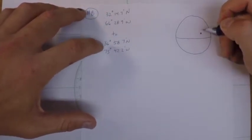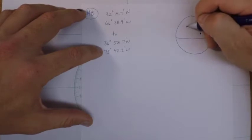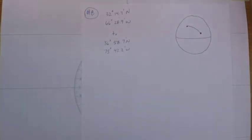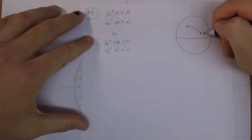So it doesn't seem like they're very far away, but it's enough that we do need to take into account curvature of the earth. So we're going from A to B and they want us to use Mercator sailing.